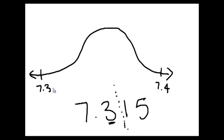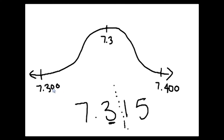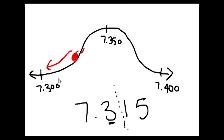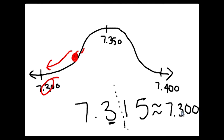If it helps you to think about where this number falls, you can always add those zeros after. Right in the middle — keep this the same, seven point three — and then right in between three hundred thousandths and four hundred thousandths would be three hundred fifty thousandths. So think about where seven and three hundred fifteen thousandths falls: it's definitely going to roll down toward this side, which means seven and three hundred fifteen thousandths rounded to the nearest tenth is about seven and three tenths.